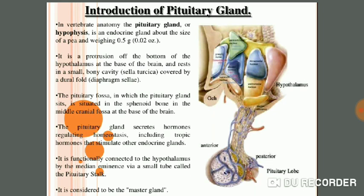This gland is originated from two types of tissues. One type appears from Rathke's pouch, and the other type is neuronal in origin — they develop from the hypothalamus, which is the lower part of the brain. This gland is also connected to the hypothalamus by a special stalk known as the pituitary stalk or hypophysis stalk. Functionally and by origin, the gland is divided into portions or lobes.